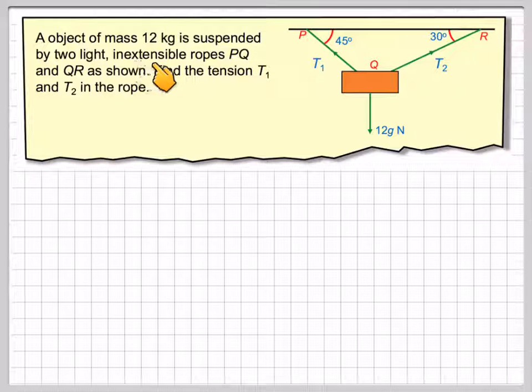An object of mass 12 kilograms is suspended by two light inextensible ropes PQ and QR as shown. Find the tension T1 and T2 in the ropes. Here's the object with a mass of 12 kilograms. Its weight will be 12G Newtons. Tension in this string here and tension in this string here. This is 45 degrees, this is 30 degrees. We've got to find the value of T1 and T2.